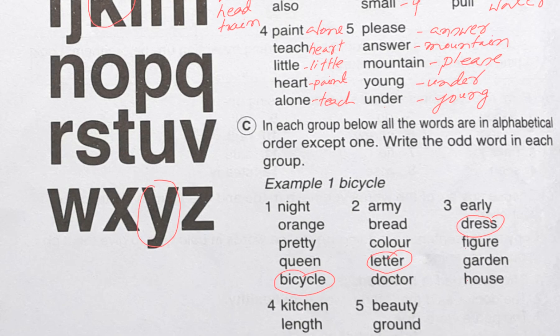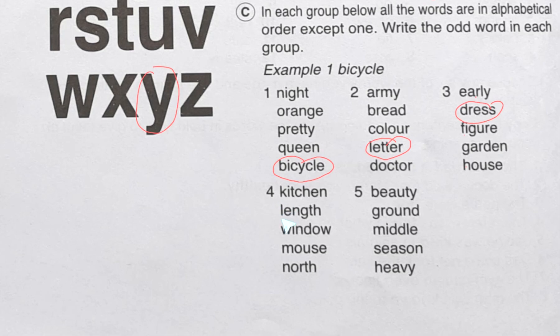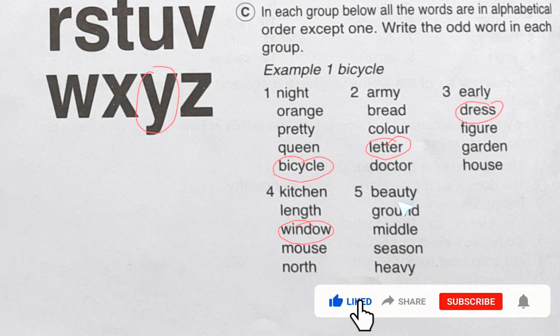Now four number: kitchen, length, window, mouse, north. See here K L M N - this word is not properly arranged. Now five number: beauty, ground, middle, season, heavy. B G M S - after that of course not H, so this word will be the answer.